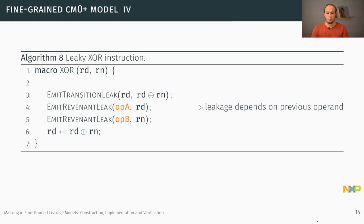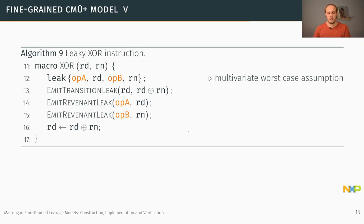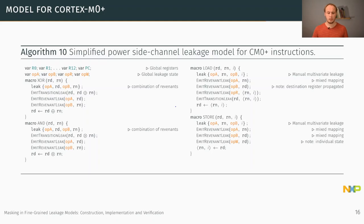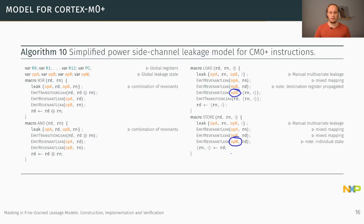We annotate our XOR with this to get a more complete model. In our case, we specified an additional worst-case assumption: a leak of all four relevant values at the cost of one single probe, meaning an adversary can observe any combination of those four values. In the end, we arrive at a leakage model sufficiently complete for our use cases, specifying the side-channel behavior of XOR, load, and store — where load and store each need one additional leakage state. This model is sufficient to achieve side-channel resilience and TVLA up to 1 million traces.